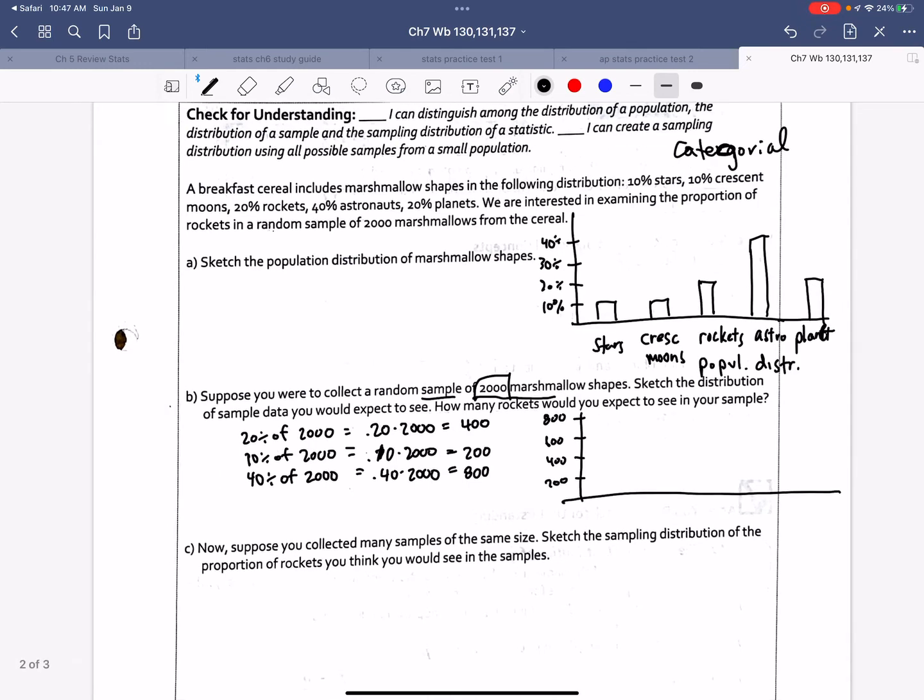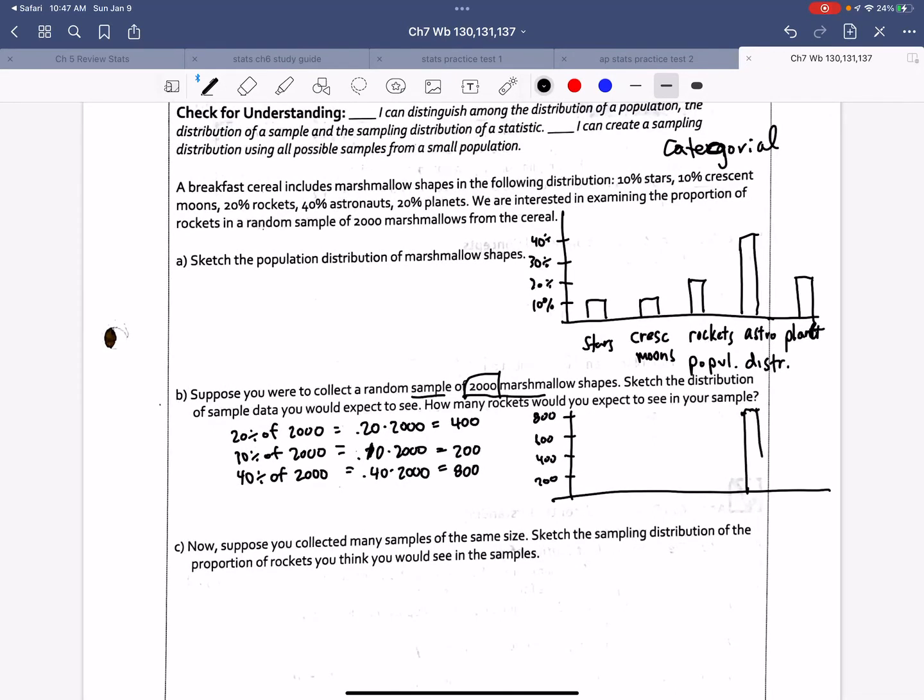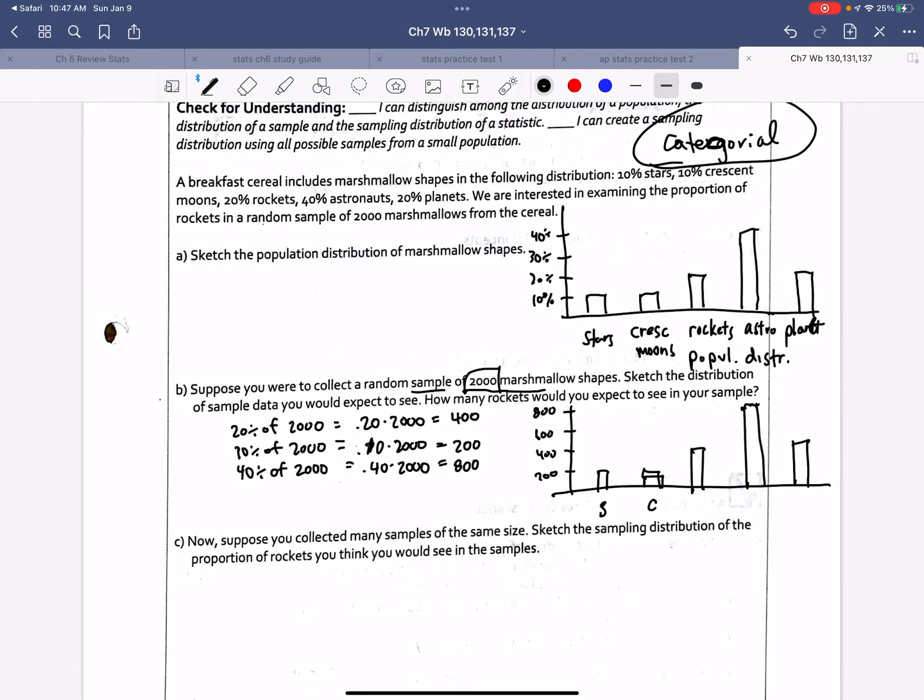So my chart's going to look pretty much exactly the same except stars and crescents at 10% would just be the number 200 and rockets and planets that were at 20% are now 400 and astronauts would be 800. And we wouldn't expect maybe exactly, but somewhere close. So again, the astronauts would maybe be 799, 758, something close to that. But I'm expecting to see the same shape. I'm expecting to see something close to that. So this is stars, crescent moons, rockets, astronauts, and planets. This is not my population distribution now. This is my sample of 2000.